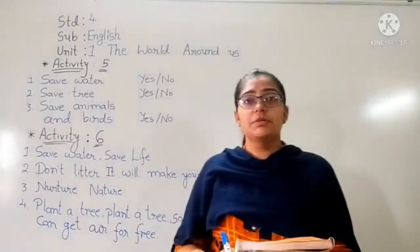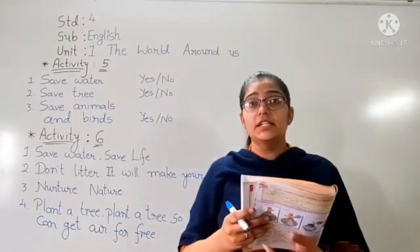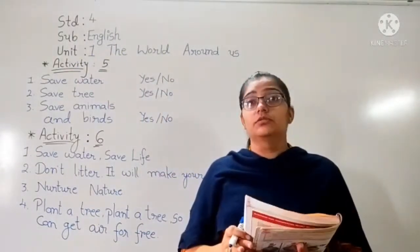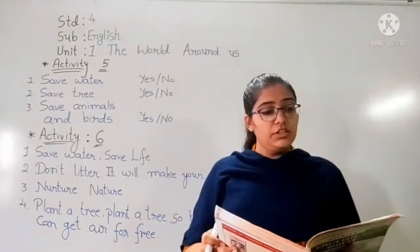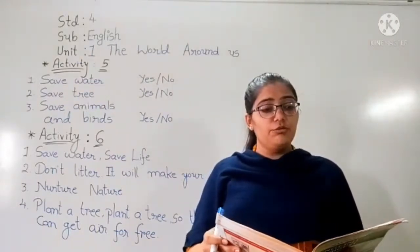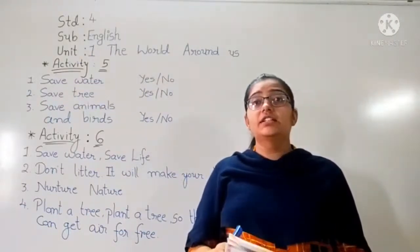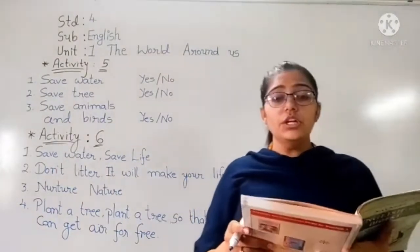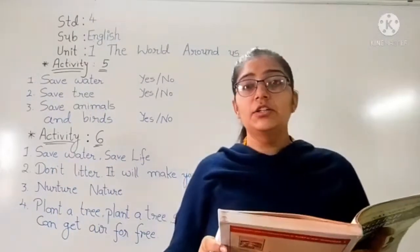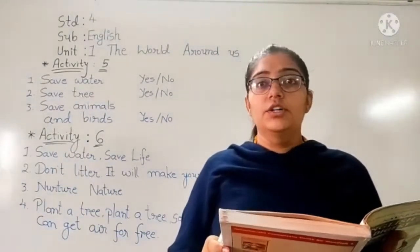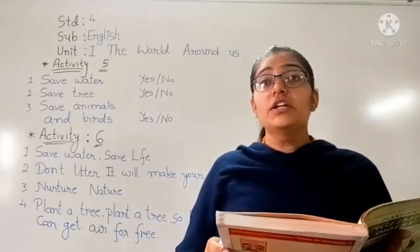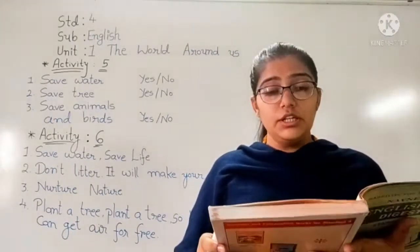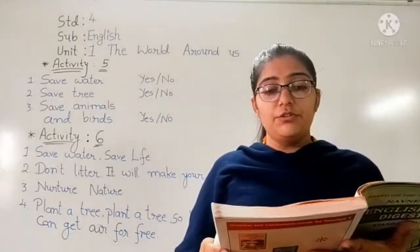So in the last previous video, we had seen activity 4. In activity 4, we had to find people-friendly words and complete our story — the story of the fading glory of the earth. So in this video, we will be learning activity 5.